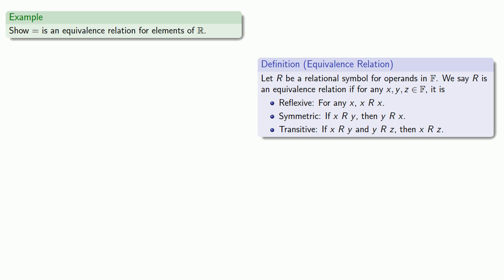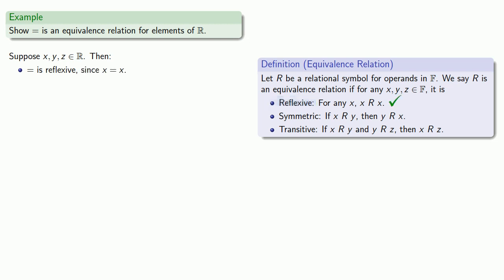So let's suppose x, y, and z are real numbers, and we'll check our three requirements for the equals sign. First, equals is reflexive, since x is equal to x — which means our first requirement is met. Equals is symmetric, since whenever x is equal to y, y is equal to x — which means our second requirement is met.